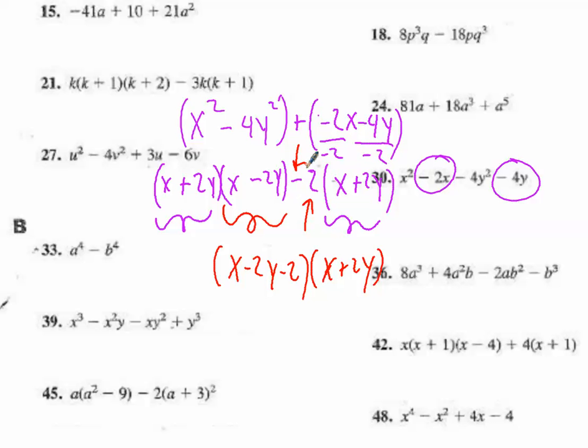Let's double-check the answer. Oh my goodness, I jumped to 30 — I forgot 27. As luck would have it, that is the answer. So we're good, moving on to 33.